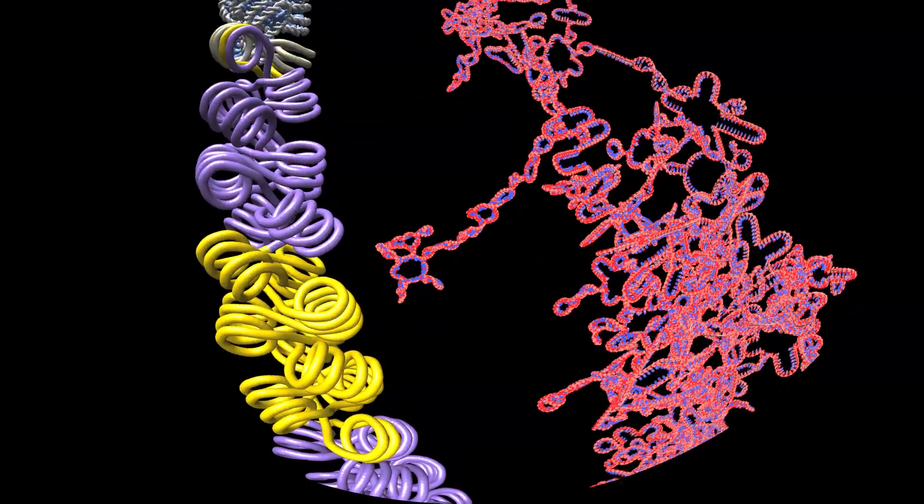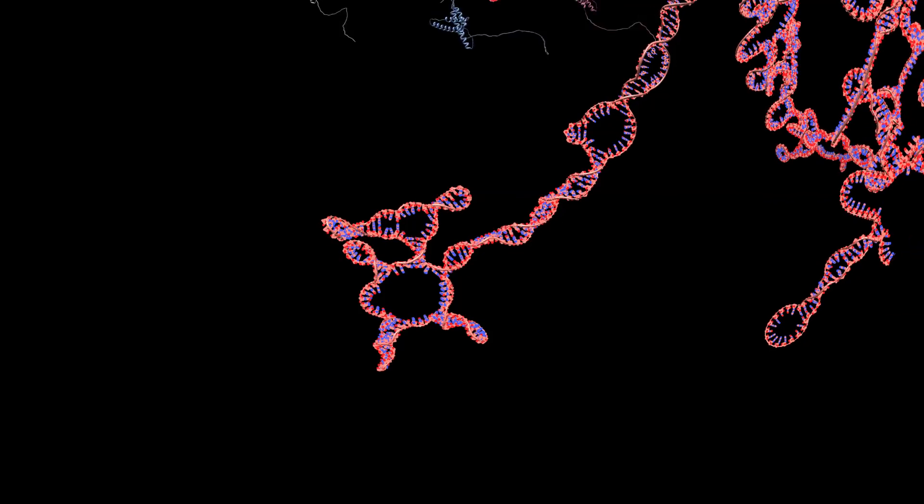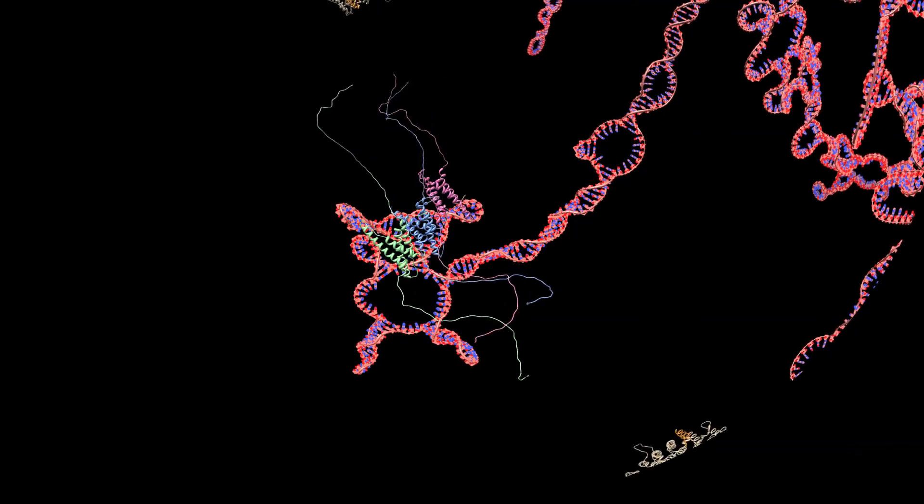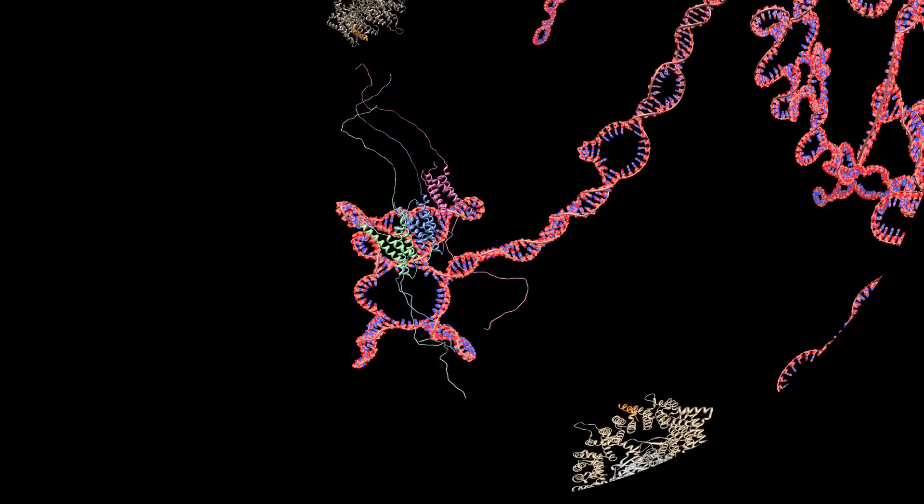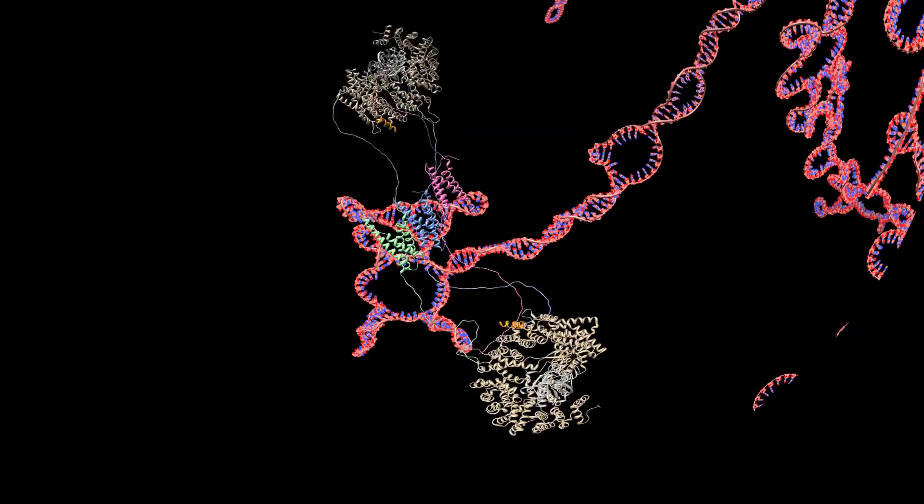RNA is normally cut and spliced into individual genes. HIV can avoid this fate using its REV protein to tether nuclear export molecules, which will escort the uncut RNA out of the nucleus.